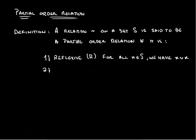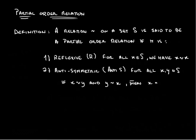So this is 1, this is 2. We have anti-symmetry. So it is anti-symmetric, which we'll denote this by Anti-S, and that is for all x and y that are in S. If x is related to y and y is related to x, then x is equal to y.